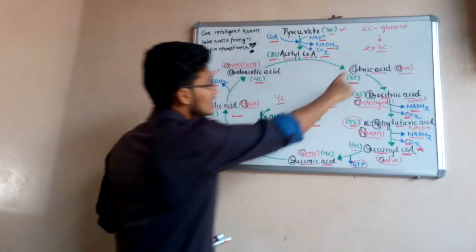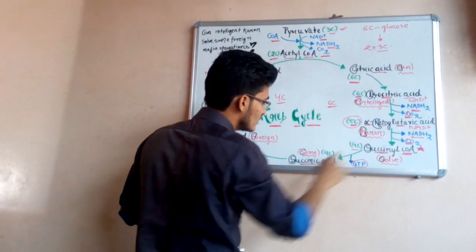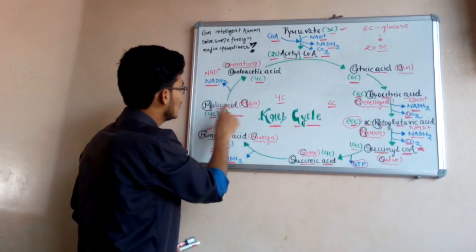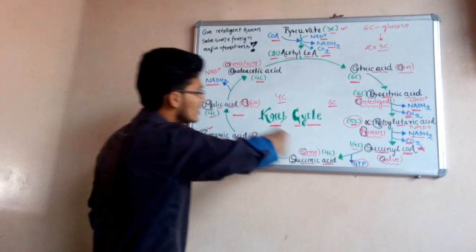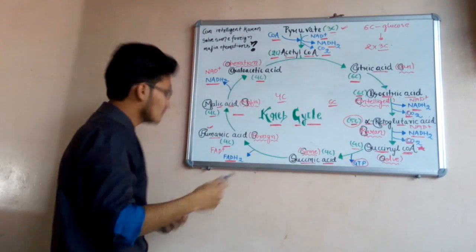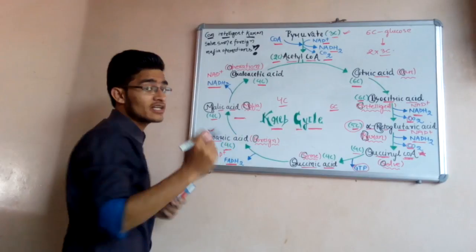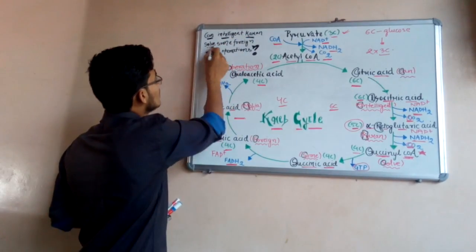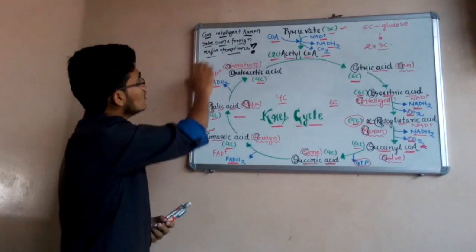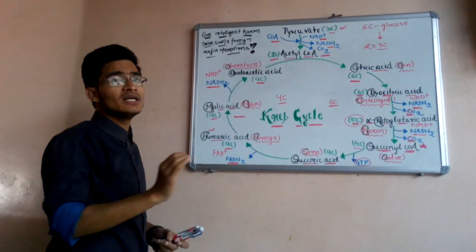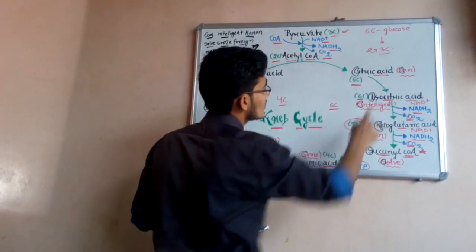The trick is based on the first letter of each compound: Citric acid, Isocitric acid, Ketoglutaric acid, Succinyl Coenzyme A, Succinic acid, Fumaric acid, Malic acid, and Oxaloacetic acid. The mnemonic sentence is: 'Can Intelligent Current Solve Some Foreign Mafia Operation?' — where C stands for 'Can', which means citric acid.